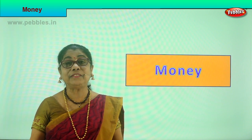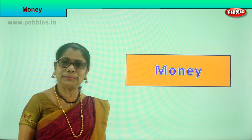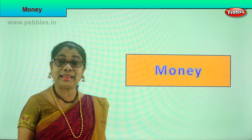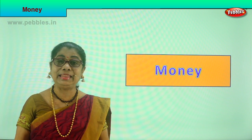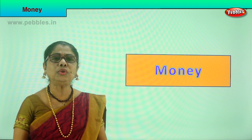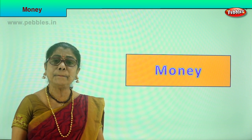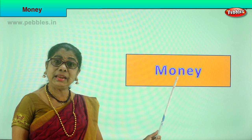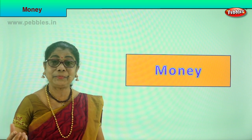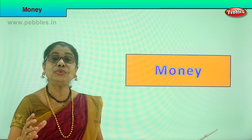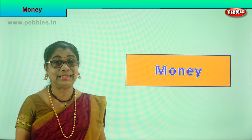Hi children, today we are doing something very interesting - money! Do you like money? What do you need money for? Who gives you money? Daddy. And what does he say? You can buy a chocolate, you can buy some toy. Indian money - we have coins and paper money. Do you need money to go to school? Yes, you have to pay fees, buy your uniform, books. When you travel, we need money to travel from home to school. It's a very important topic - money. We are going to look at the denomination and value of each coin and each paper currency.